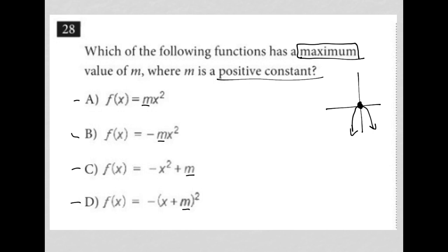So for choice A, for instance, if we were to graph this, our graph would look just like this. Actually, that's not true. It would be an upward-facing parabola with a vertex at the origin, which means our vertex is there, which means we actually don't have a maximum. We actually have a minimum, which automatically makes this incorrect.